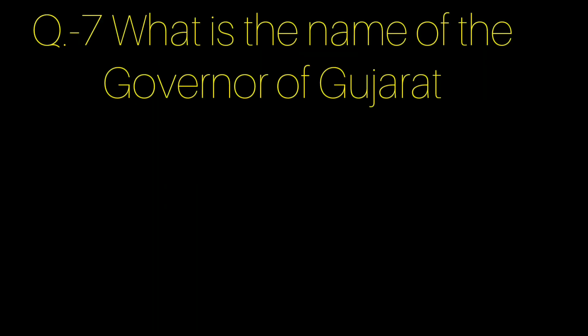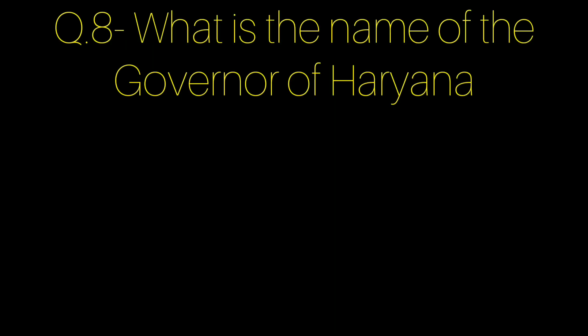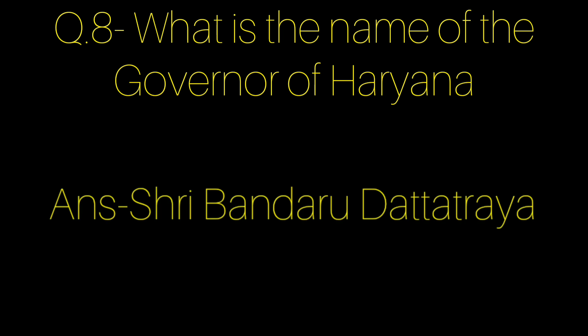Question number 7: What is the name of the governor of Gujarat? Answer: Shri Acharya Dev Bharat. Question number 8: What is the name of the governor of Haryana? Answer: Shri Bandru Dattatreya.